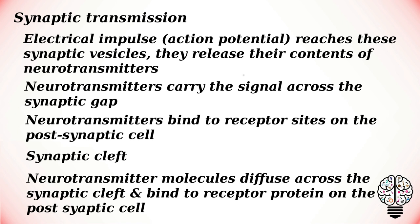When the electrical impulse — the action potential — reaches the synaptic vesicles, they release their contents of neurotransmitters. Neurotransmitters then carry the signal across the synaptic gap and bind to receptor sites on the post-synaptic cell, completing the process of synaptic transmission. The small gap between the pre-synaptic neuron and the post-synaptic cell is called the synaptic cleft. The neurotransmitter molecules diffuse across the synaptic cleft and bind to receptor proteins on the post-synaptic cell.